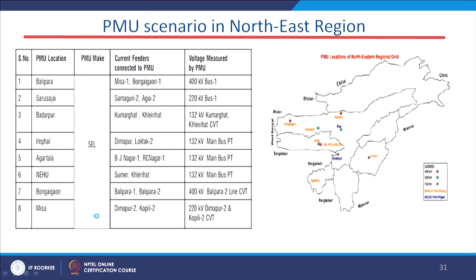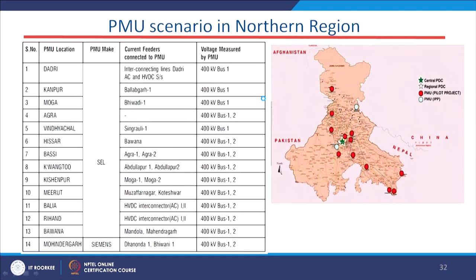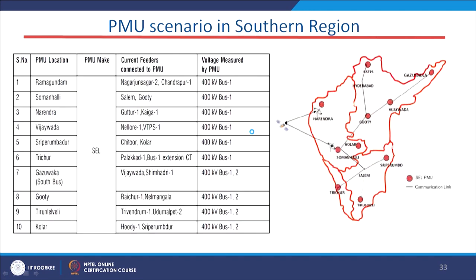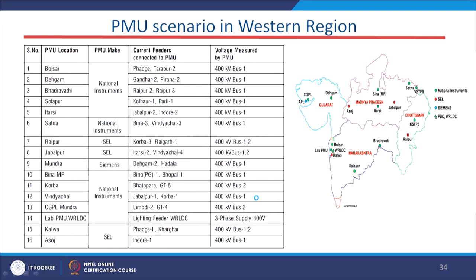The north-east region also has PMU connections. For the northern region, PMUs are installed at Dadri, Kanpur, and Agra at the 400 kV bus system. Similarly, for the southern and western regions, PMUs are installed at the 400 kV level for further processing.